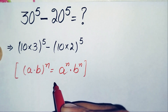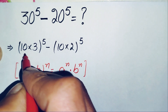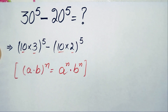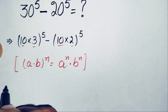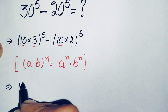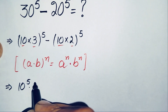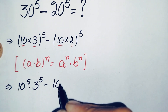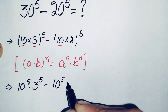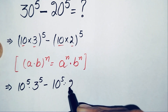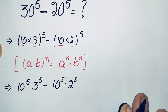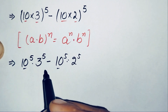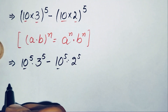Using this identity, we will spread the power over both bases in each term. The equation becomes: 10 raised to power 5 times 3 raised to power 5, minus 10 raised to power 5 times 2 raised to power 5. Now, 10 raised to power 5 is common in both terms, so we will take it out as a common factor.